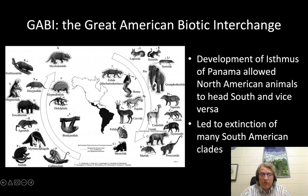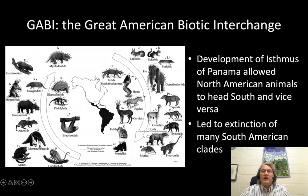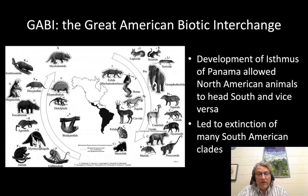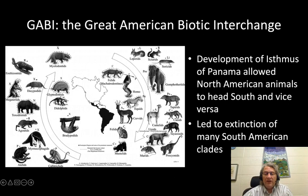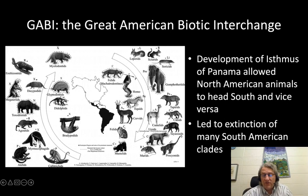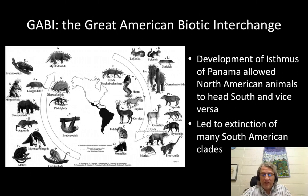Heading south, we've got gomphotheres, which are a sort of proboscidean — that is, elephant group. We have tapirs, we have camelids. That's right — the llama and the alpaca, and their wild ancestors the vicuña and guanacos, they're not South American; they're of North American ancestry. Camels actually originated in North America. Deer, cats — jaguars did not come from South America. Peccaries, canids (that is dogs), ursids (that is bears, though they have since gone extinct down there), procyonids (that's the raccoon family — the coatimundi has its ancestry in North America), mice, skunks, and so forth — and eventually humans.